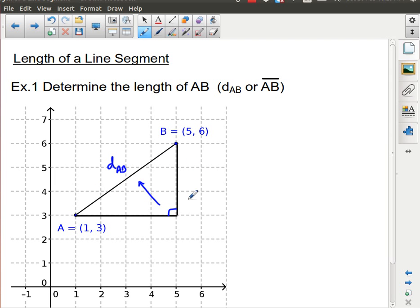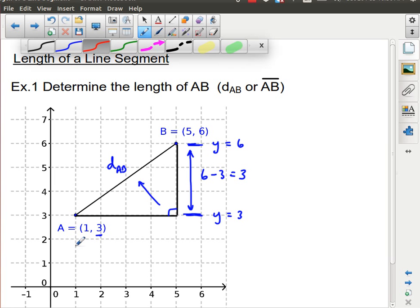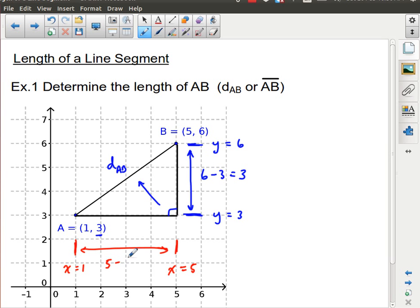This vertical length, if we imagine this is at the value y equals 6, and then down here we have the value from here y equals 3. So from 3 to 6, that gives me a distance, my vertical distance for this triangle is going to be 6 minus 3, which is simply equal to 3. Horizontally, from here we have x equals 1, and here we have x equals 5. And so the distance between those two edges is going to be 5 minus 1, which is equal to 4.